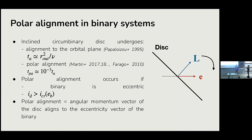Physically speaking, polar alignment means that the angular momentum vector of the disk aligns to the eccentricity vector of the stellar system.